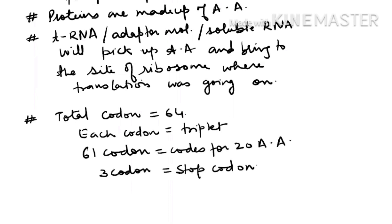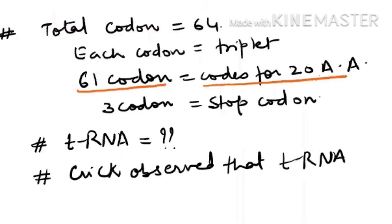We need to emphasize here: even though there are 61 codons coding for only 20 amino acids, and the amino acids are brought to the place with the help of transfer RNA — do we require 61 transfer RNAs or not? This was the doubt in the minds of scientists. Crick observed that the number of transfer RNAs required is actually less than 61.